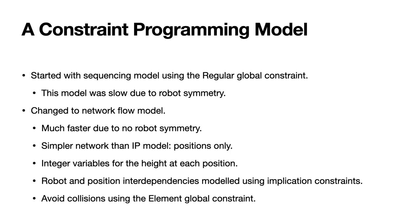Now let's take a look at the constraint programming model in more detail. We initially started with a sequencing model using the regular global constraint, because we know that CP propagates regular very well. In this model we had one regular constraint for each robot. This wasn't very effective in practice because there are robot symmetries — every robot is assigned a particular index, and there are many equivalent solutions arising from permuting the indices of the robots. These robot symmetries make the model very slow to solve. So we changed to a network flow model similar to the integer programming model, and by doing this the model was much faster because there are no robot symmetries, even though CP likes the regular global constraint more than network flow structure.